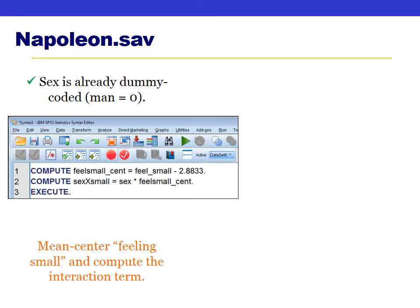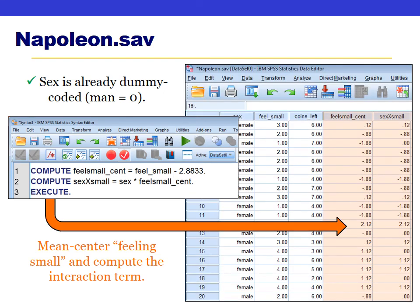For steps two and three, we use syntax. The first line computes a new variable called feel_small_centered, equal to each person's feeling small score minus the mean of 2.883. The second line computes the interaction term — sex_by_small — equal to each person's sex score multiplied by their mean-centered feeling small score. Running this syntax gives us two new variables: the mean-centered feeling small variable and the interaction term.